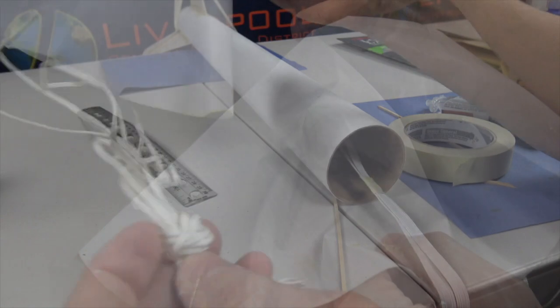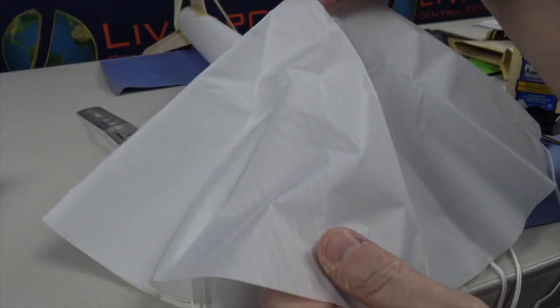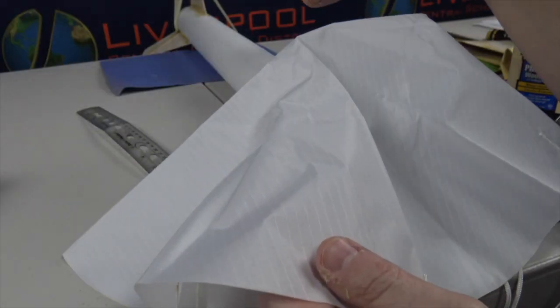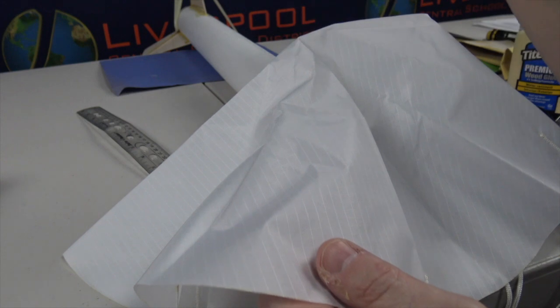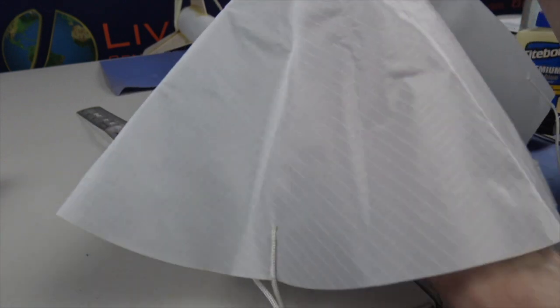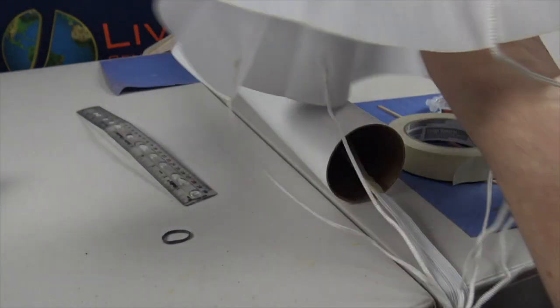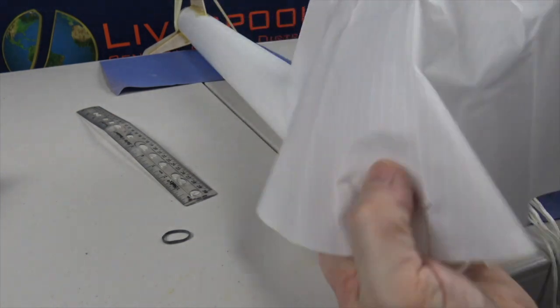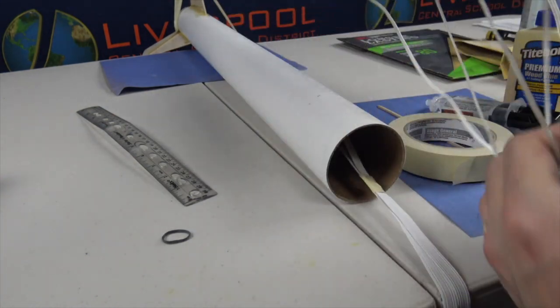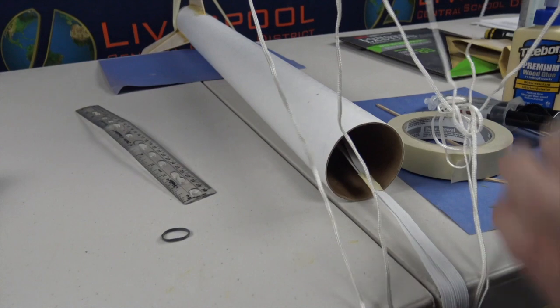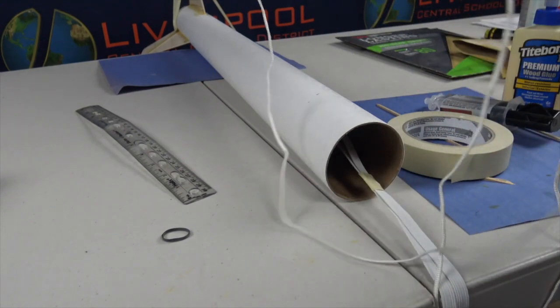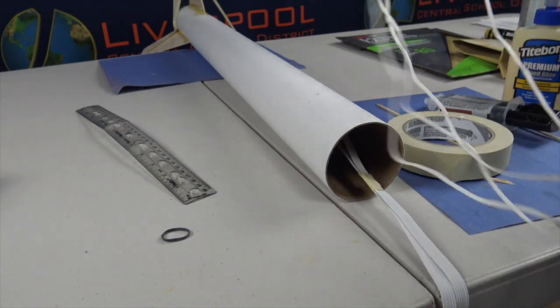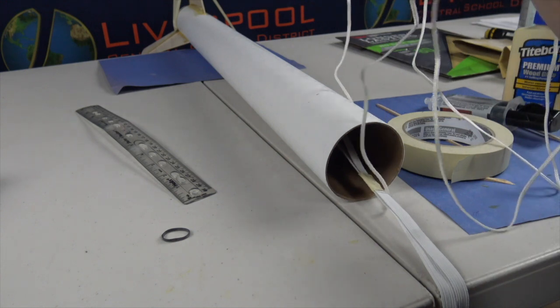I'll show you how to do that in just a second. Our parachute is an 18 inch parachute. The larger the parachute you have, the slower the rocket will descend back to the ground. However, if there's a slight breeze, it'll carry. It'll just drift like a kite. So the 18 inch parachute is a good size for these rockets. What I'm going to do is just get all my lines.